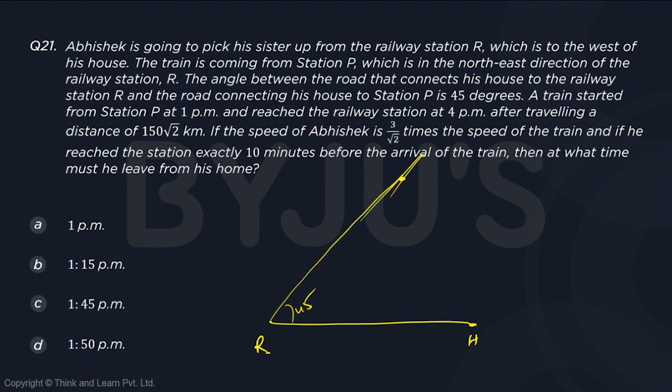The angle between the road that connects his house to the railway station — this road, house to the railway station road — and the road connecting his house to station P is also 45 degrees. So, this is an isosceles triangle. This is your P, and this angle is also 45.